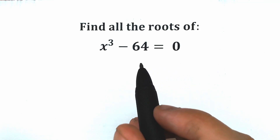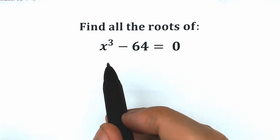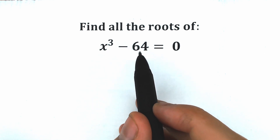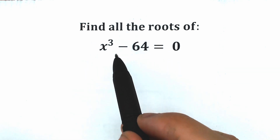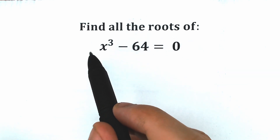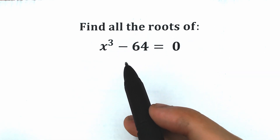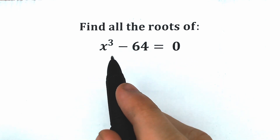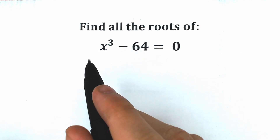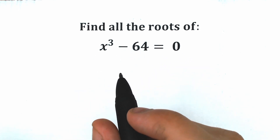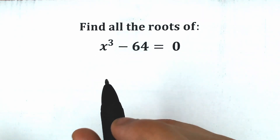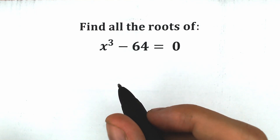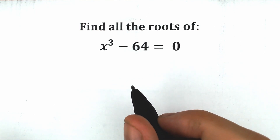Hi, I'm Mathematics, and today we have a really interesting challenge. We have a cubic equation x cubed minus 64 equal to zero, and we need to find all the roots. A lot of students might say we can easily solve this by inspection, but in terms of math it doesn't work like that. We need to find all the roots correctly and step by step.